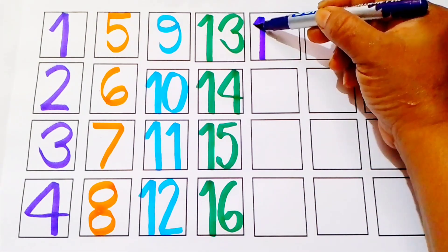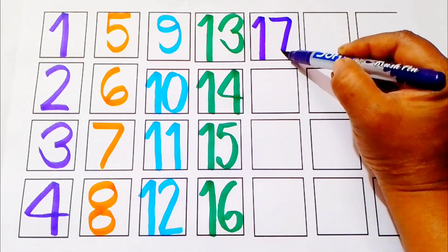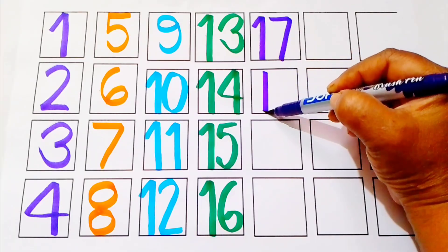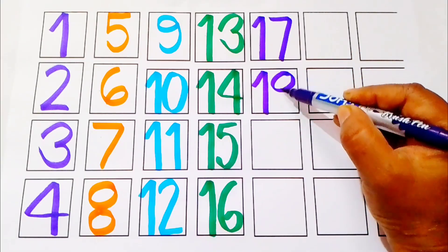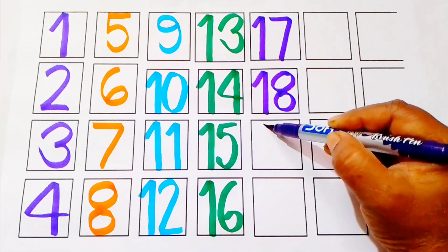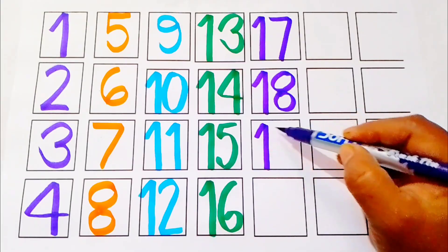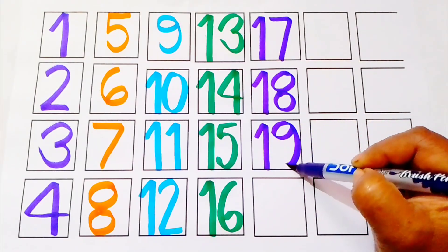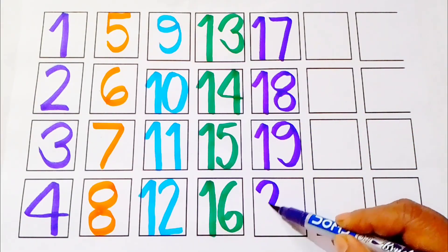One, seven. Seventeen. One, eight. Eighteen. One, nine. Nineteen. Two, zero. Twenty.